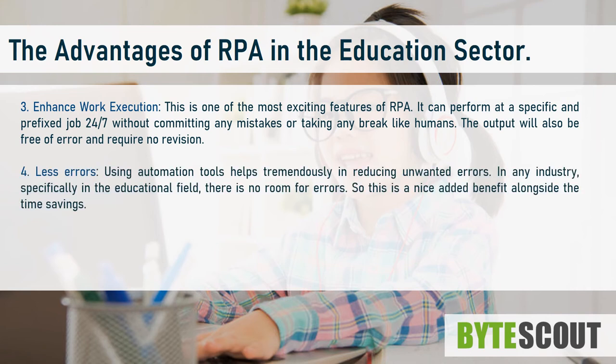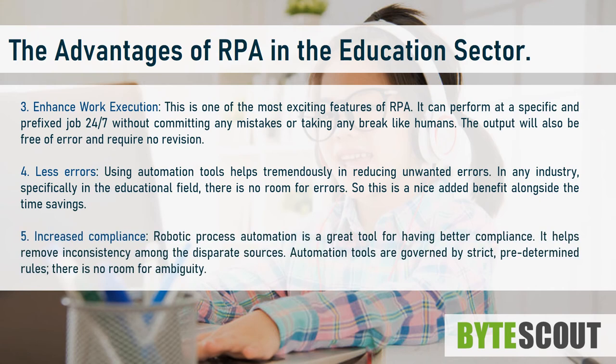4. Less errors. Using automation tools helps tremendously in reducing unwanted errors. In any industry, specifically in the educational field, there is no room for errors. So this is a nice added benefit alongside the time savings. 5. Increased compliance. Robotic process automation is a great tool for having better compliance. It helps remove inconsistency among the disparate sources. Automation tools are governed by strict, predetermined rules — there is no room for ambiguity.